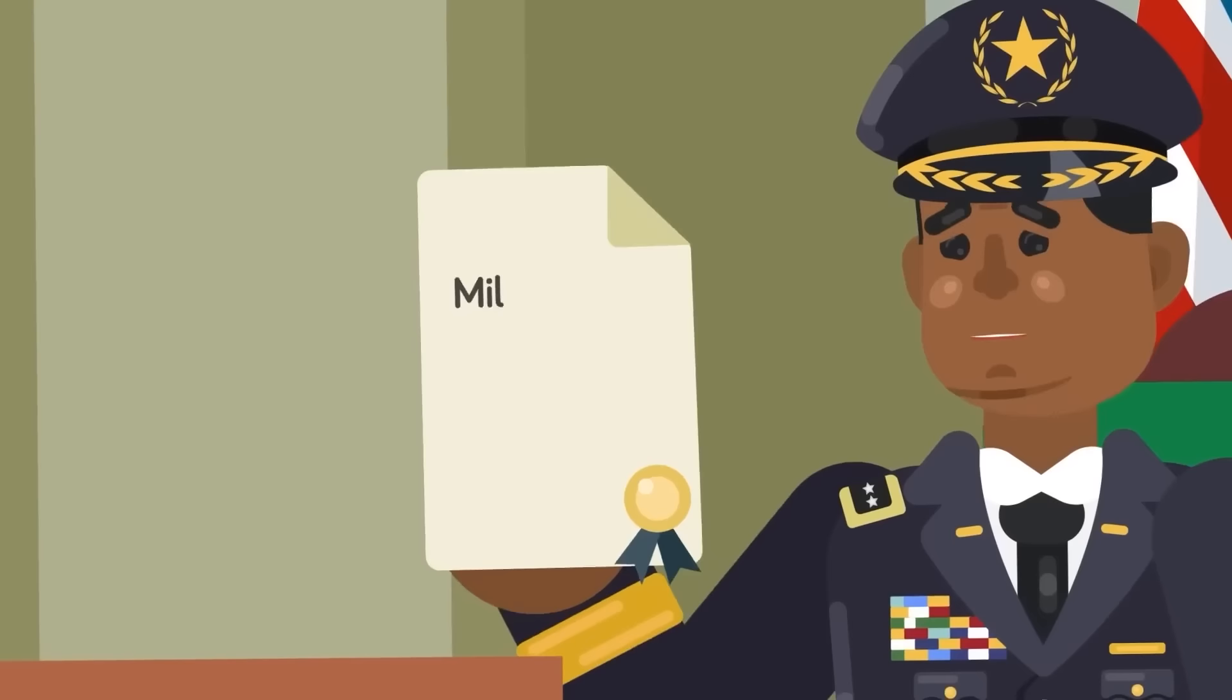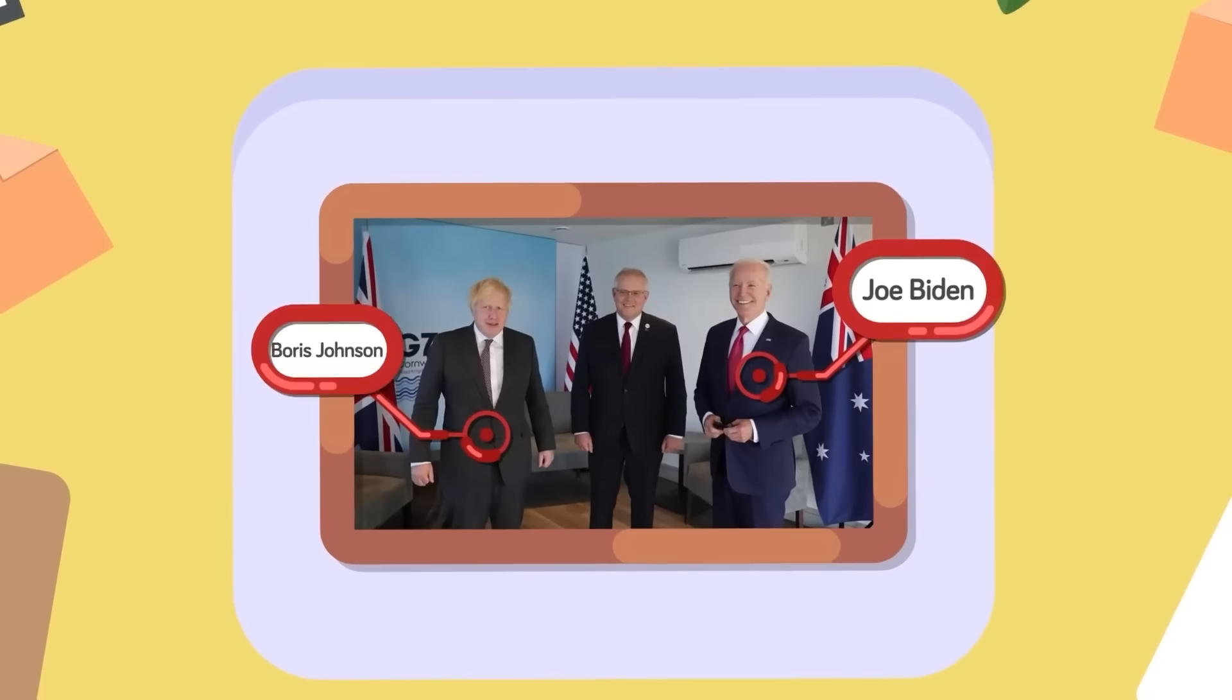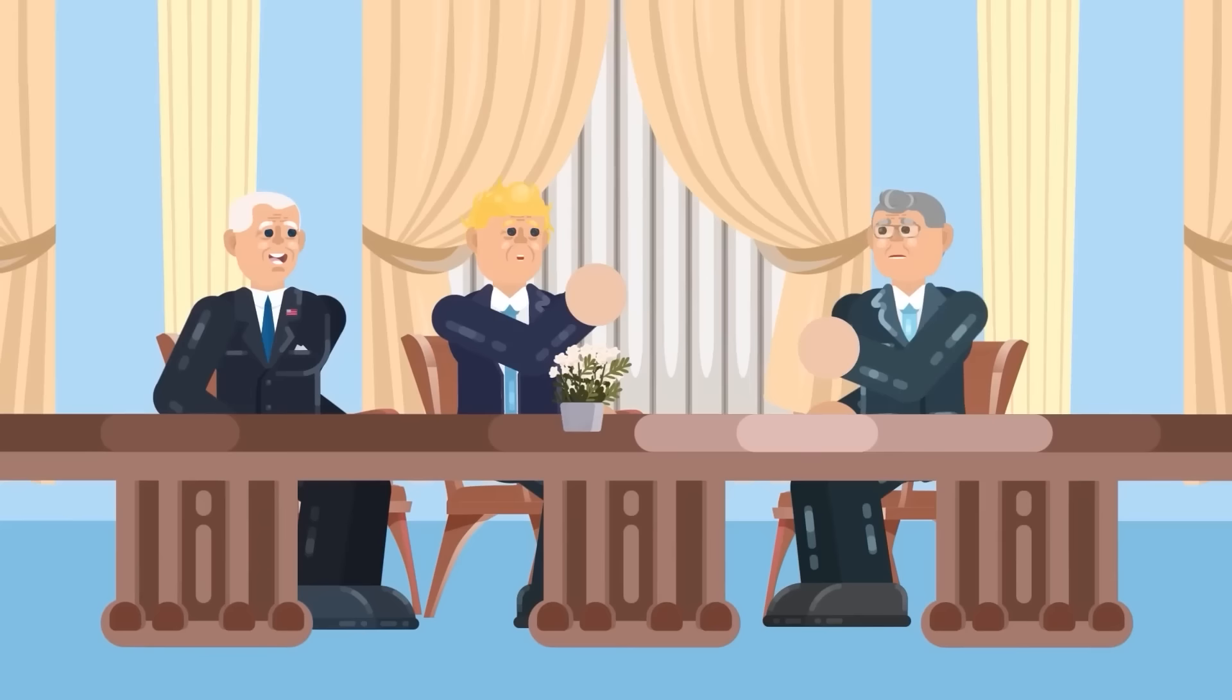Then, at the G7 Summit in June of 2021 in Cornwall, England, President Biden, and then-Prime Ministers Boris Johnson of Britain and Prime Minister Scott Morrison of Australia met to discuss the alliance further. Eventually, the meetings turned into an actual deal. It was agreed that both the US and UK would aid Australia in modernizing its submarine fleet.